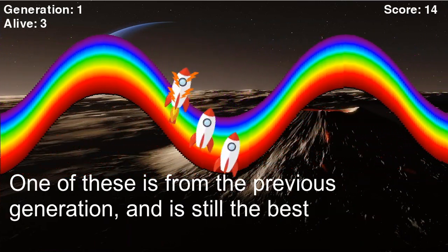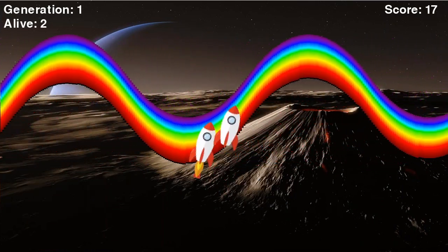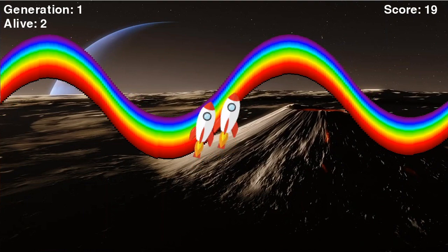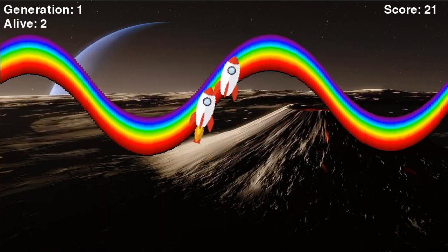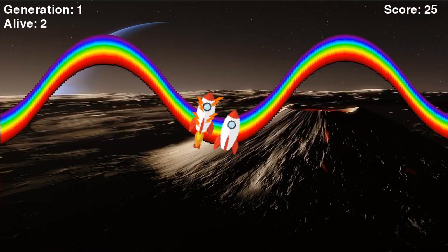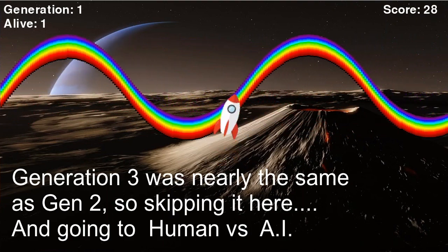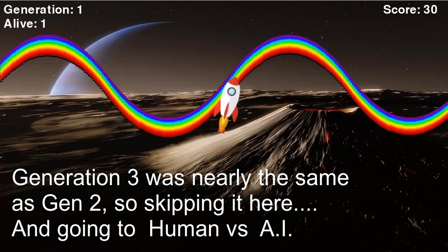NEAT takes that information and continues making more generations. I'm confident that the winner of the second generation isn't 100% optimal. I set NEAT up to run 3 generations. However, generation 3 plays out nearly the same as generation 2, so I'm not showing it. After 3 generations, I took the best AI and added a rocket that I could control to see how well the AI would do against me.